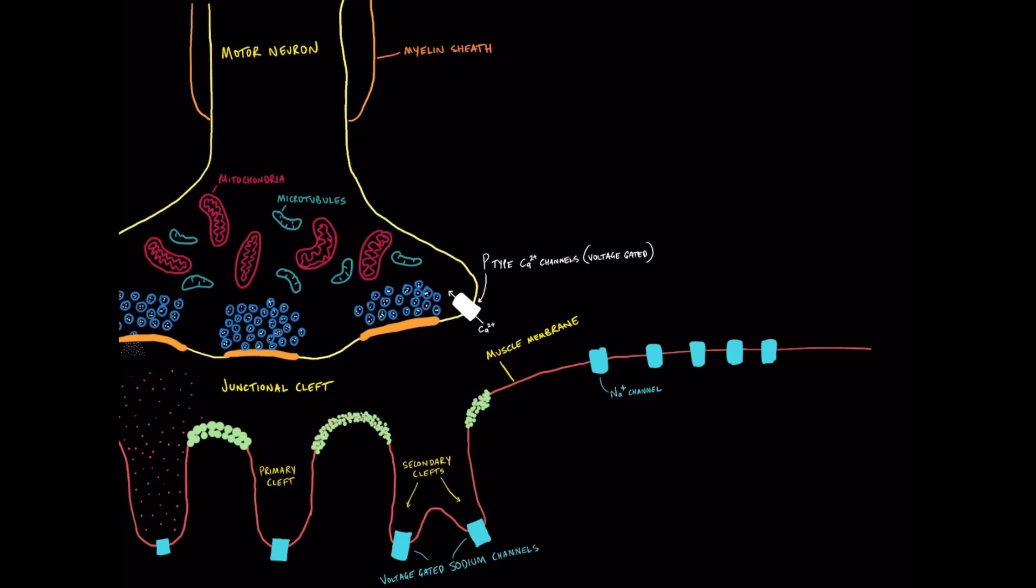And we're going to mention a few things about these receptors in this video. So there's a couple of types of calcium channels in physiology. The most important for neuromuscular transmission is these P-type calcium channels that I have written here. And the concentration of the calcium in the extracellular fluid is critical to the release of neurotransmitter into the junctional cleft.